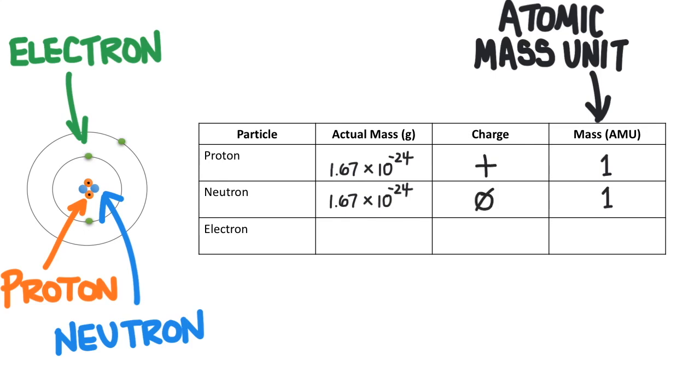The rest of the atom is mostly empty space with the electrons flying around the outside of the nucleus. The electrons are tiny compared to the other particles with an actual mass of 9.10 times 10 to the negative 29 grams. But on the AMU scale they have a mass of 0 AMU and they have a negative charge.